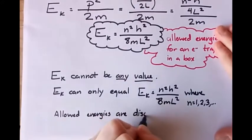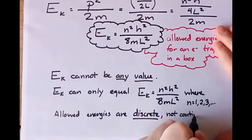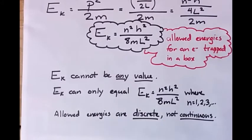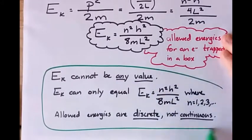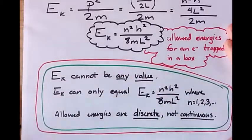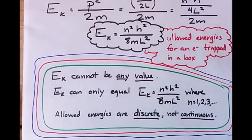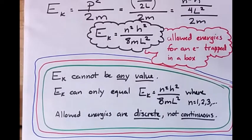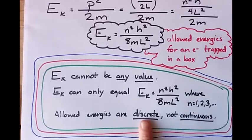That's important — that means an electron in a box cannot just have any old energy. It can only have the energies given by E equals N squared H squared over 8ML squared. The allowed energies for an electron in a box are discrete. They are not continuous. If we treat an electron as having wave-like behavior and it's trapped in a box, the energies are discrete.